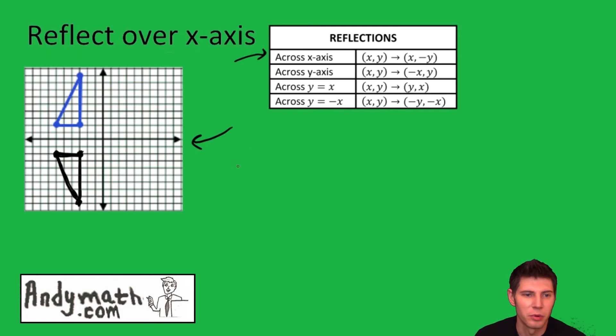So first step is identify the points you're given. So it's going to be negative 3, 2, negative 6, 2, and negative 3, 9. Then we're going to apply the mapping or the transformation for going across the x-axis.